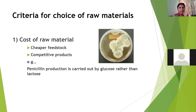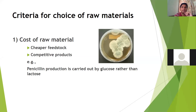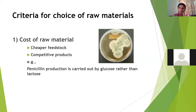Number one, we have to look at the cost of the raw material. This is very important because the cost will ultimately be translated into the cost of the final product. So we have to choose cheaper feedstocks — those that are comparatively cheaper. If we select cheaper feedstocks, it would ultimately reduce the cost of the final product, making it easier for our product to compete in the market.